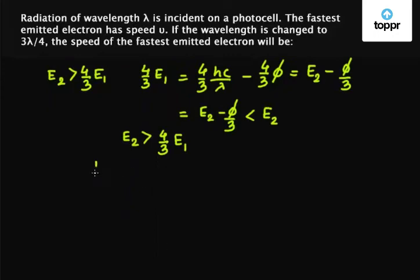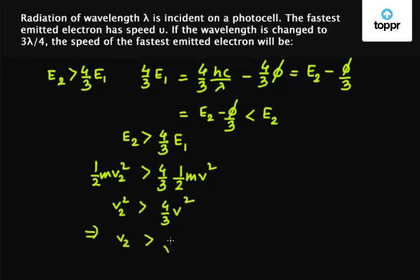Now E₂ was 1/2 mv₂² and E₁ was 1/2 mv². So we have v₂² greater than 4/3 v², which implies v₂ is greater than √(4/3) v. So the fastest emitted electron will have a velocity of √(4/3) times v.